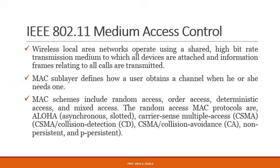The random access MAC protocols are ALOHA — that is asynchronous slotted, carrier sense asynchronous slotted protocol. The next protocol is carrier sense multiple access, that is CSMA, and along with that CSMA/CD — carrier sense multiple access collision detection — which also includes detection of the collision. Then we have CSMA/CA, that is collision avoidance, and next is non-persistent and P-persistent.